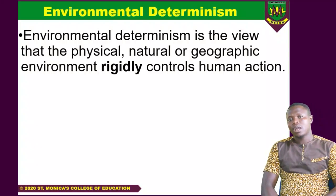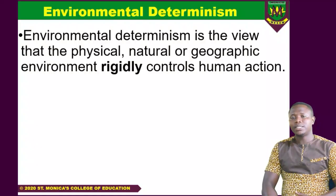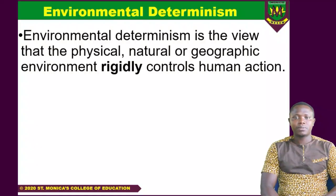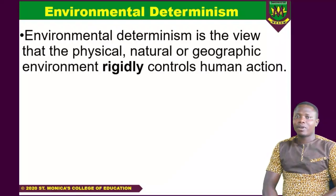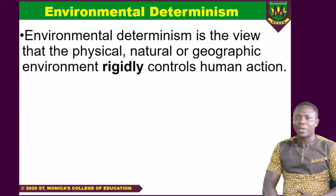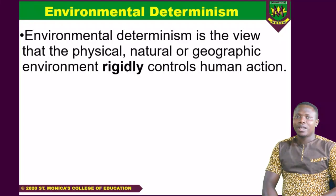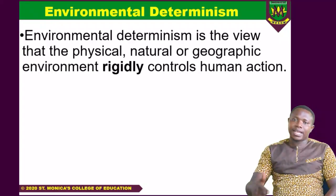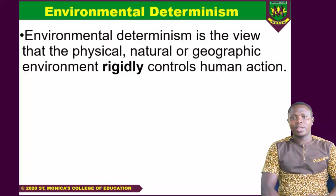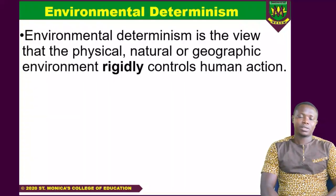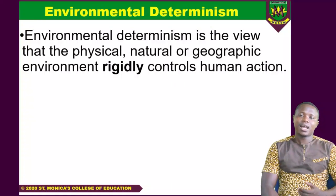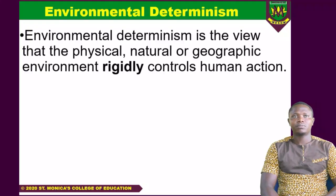But with respect to this course, we are looking at five, and this will include environmental determinism, environmental possibilism, environmental probabilism, nature theory, and nurture theory. These are the theories that you'll be looking at today.